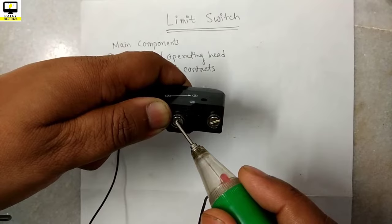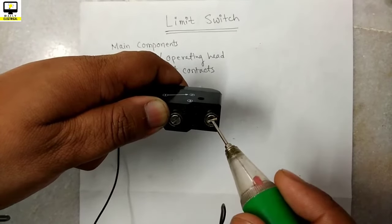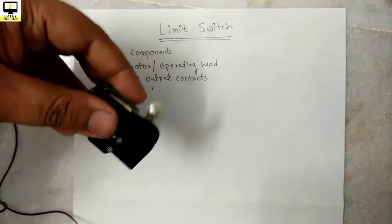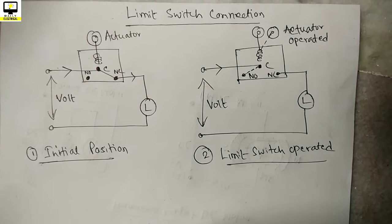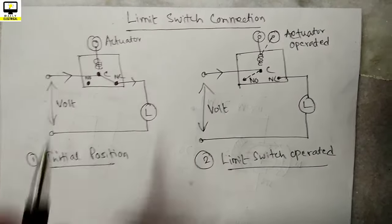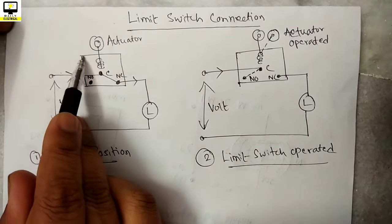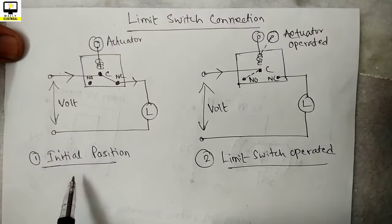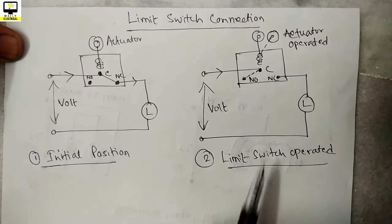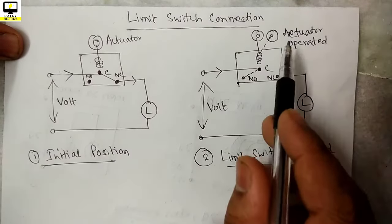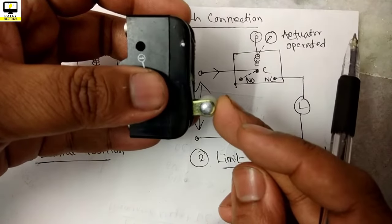And if you release this, then again the contact will be in 1 and 2. Now we shall discuss about the connection of limit switch. Consider this is the limit switch and this is the actuator which is in initial position. In the second picture here, the limit switch is operated, that means the actuator is pressed by any physical object.